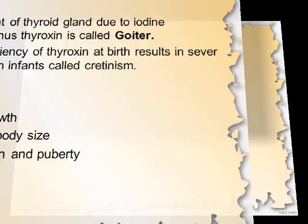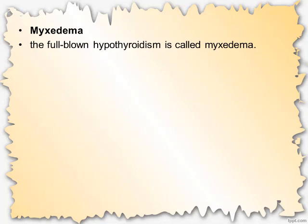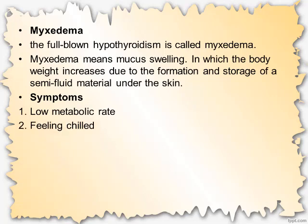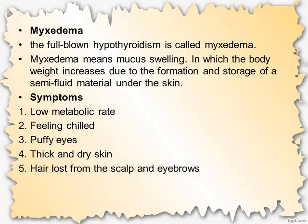Infertility is also a symptom. The full-blown form of hypothyroidism is called myxedema. Myxedema means mucus swelling, in which body weight increases due to the formation and storage of a semi-fluid material under the skin. Symptoms of myxedema include: low metabolic rate, feeling chilled, puffy eyes, thick and dry skin, hair loss from the scalp and eyebrows, and edema.